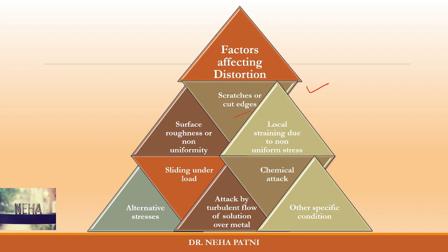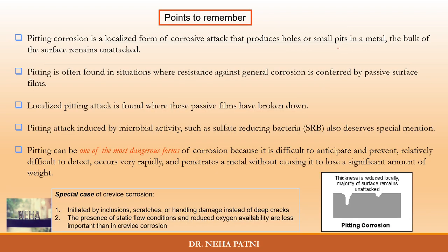Certain factors affect pit formation: scratches or cut edges cause that portion to become anodic; surface roughness or non-uniformity can make an area anodic; local straining, sliding under load, chemical attack, alternating stresses, or even the flow of solution over metal can trigger pit initiation. When some of these factors are met, a small portion becomes the anode and the rest becomes the cathode.